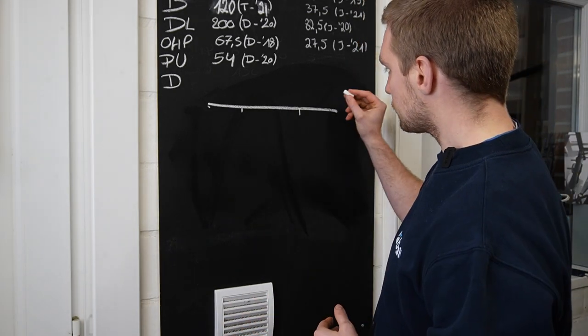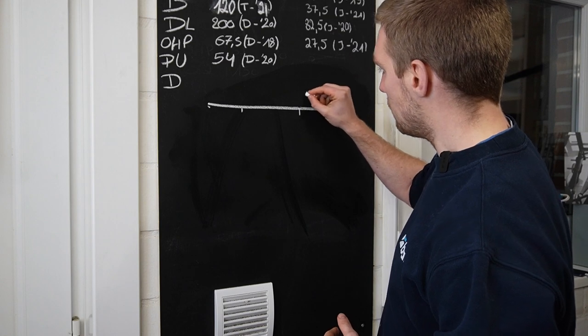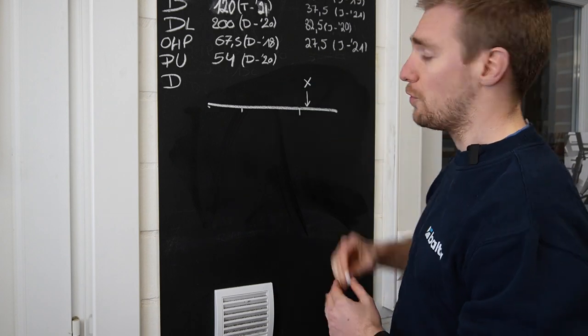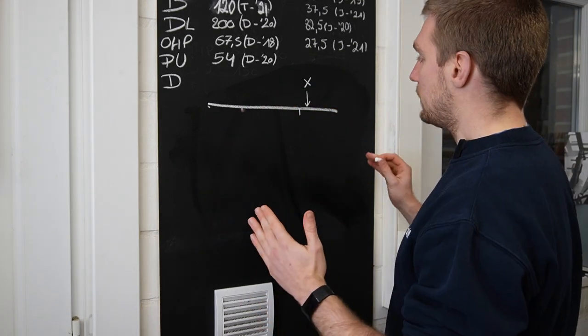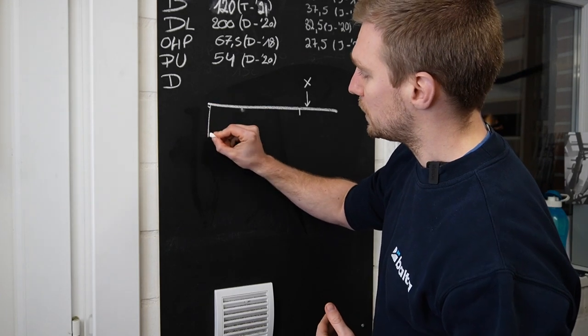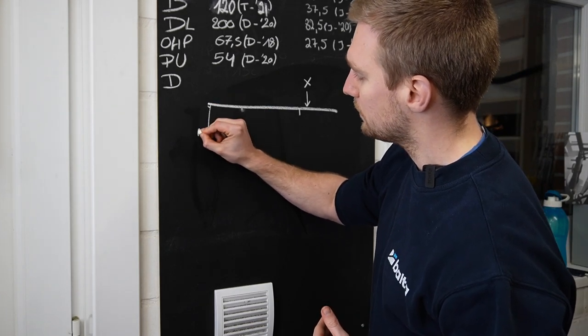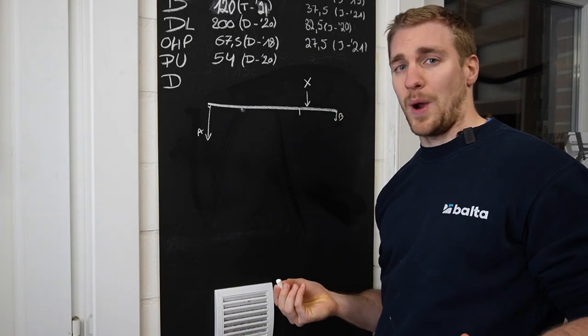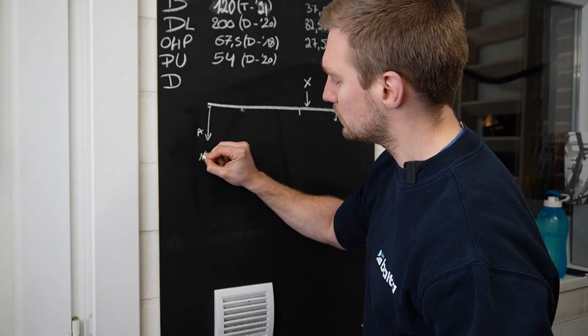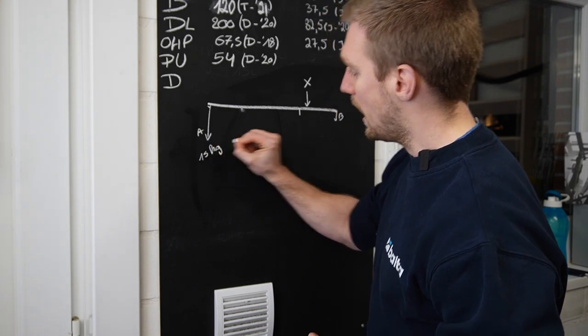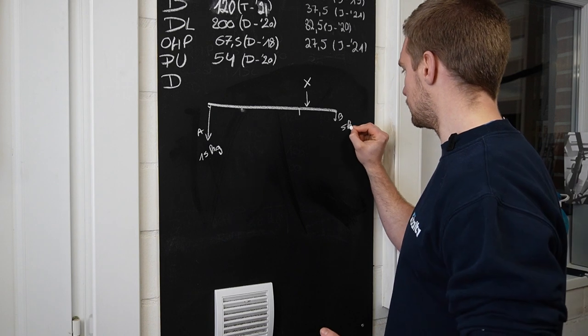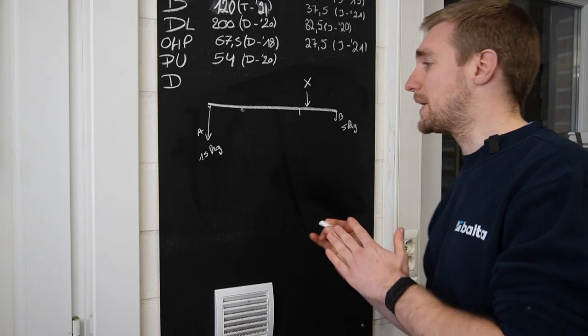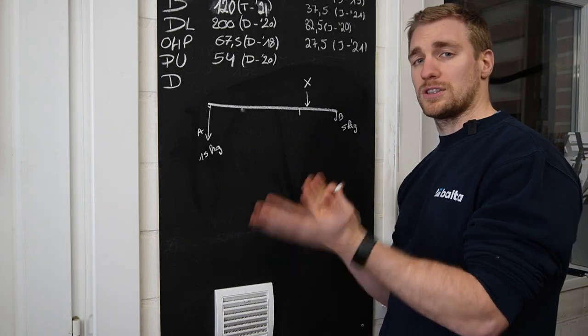Now what we want to do is calculate how much weight we can put here, we call it X, before the bar starts tipping over. Because the bar is uniform in weight, we can know that it has a force here, force A, and a force B here according to its weight. So here we know that this is 15 kilos and here we know this is 5 kilos.